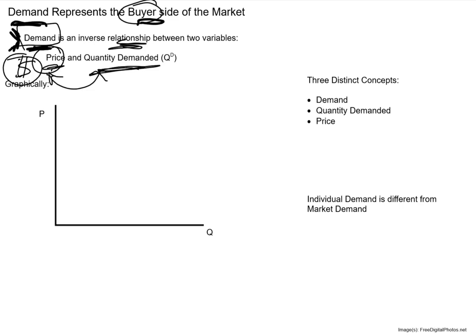The other variable we're looking at is quantity demanded. Quantity demanded is quite literally a counting up — it's the number of units that consumers want to purchase. So if we're talking about subs, this is literally the number of subs that people want to purchase.